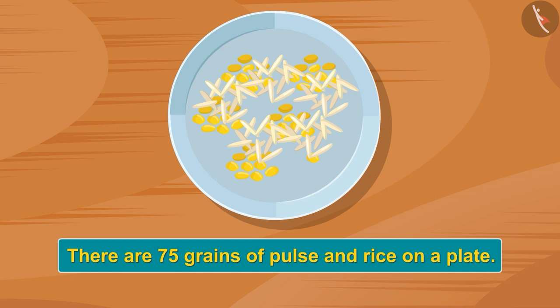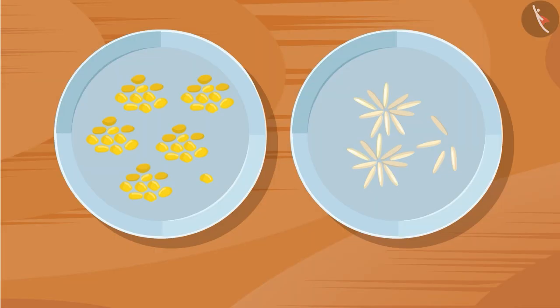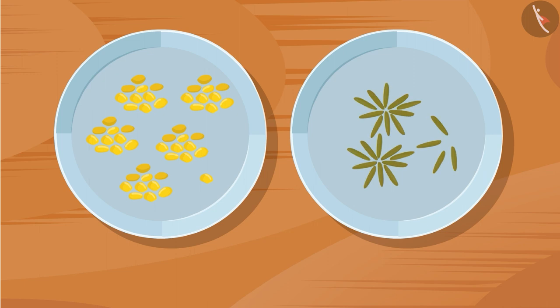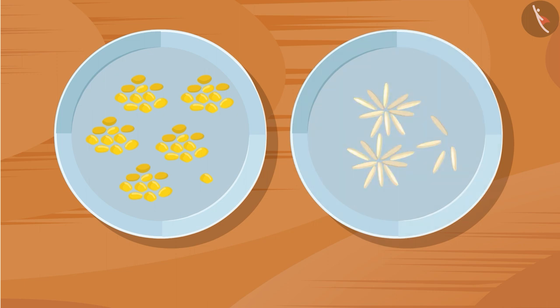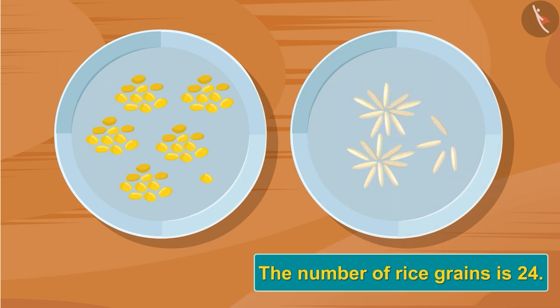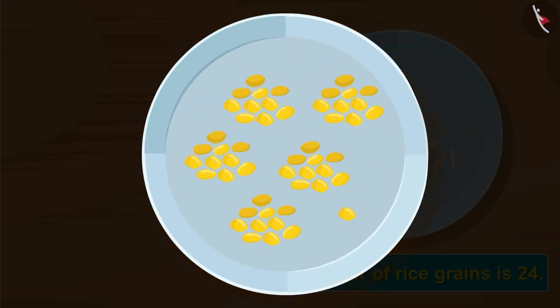There are 75 grains of pulse and rice on a plate. Gaffey put the rice grains from that plate on another plate. Gaffey noticed that the number of rice grains is 24. So, what is the number of grains of pulses kept on the plate now? Can you help Gaffey to find the number of pulses?